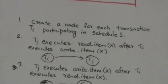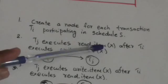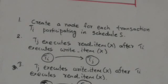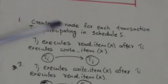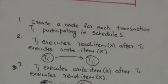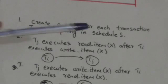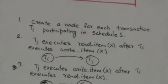The second step is: for each case in schedule S where transaction TJ executes a read item X operation after transaction TI executes a write item X operation, we will create an edge from node labeled TI to node labeled TJ in the precedence graph.